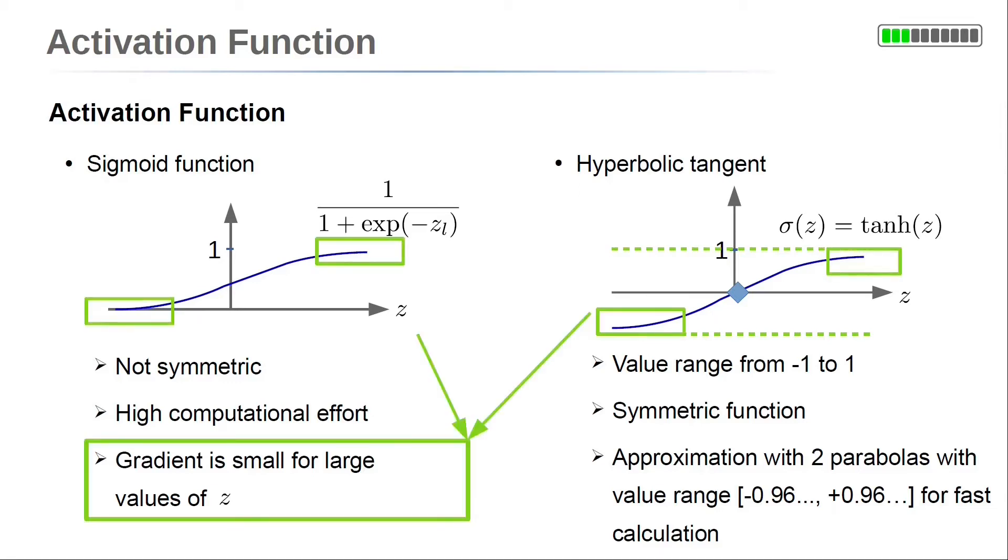A disadvantage of sigmoid as well as hyperbolic tangent function as activation is that the derivative far from z equal to 0 vanishes because the function is approximately constant. So, a gradient-based minimization might not be able to vary parameters if the summation value is large.